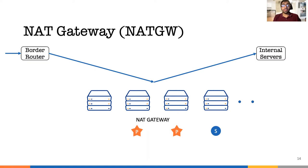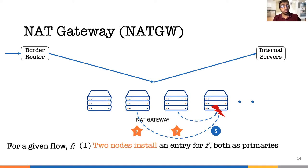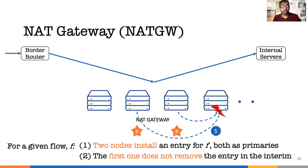Let's dive deeper into the problem introduced at the beginning of this talk, where we had two primaries thinking they are in control at the same time. We can distill this problematic scenario down to two necessary and sufficient conditions. The global system is in a bad state exactly when: one, a node installs an entry for a given flow and later another node installs an entry where both think they are the primary; and two, the first one does not remove the entry between those two installations. If both of these conditions hold, we have a violation of an invariant.